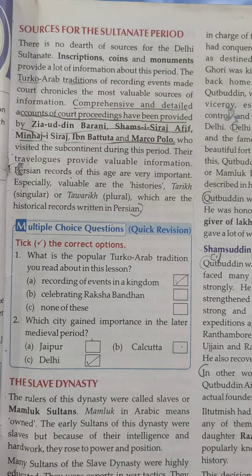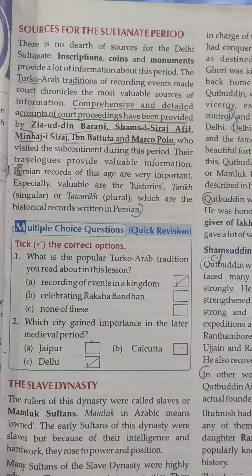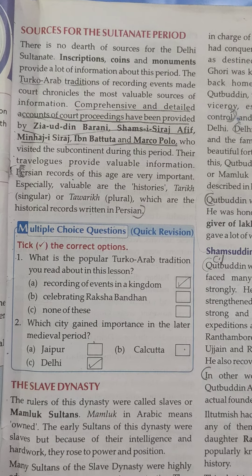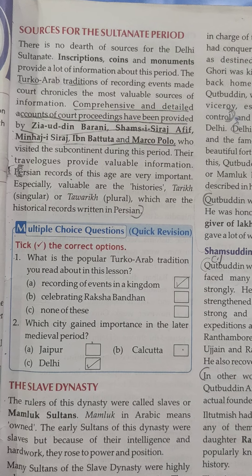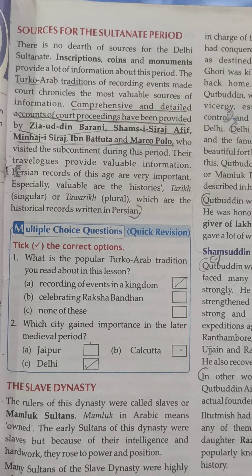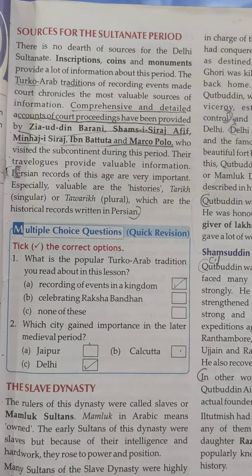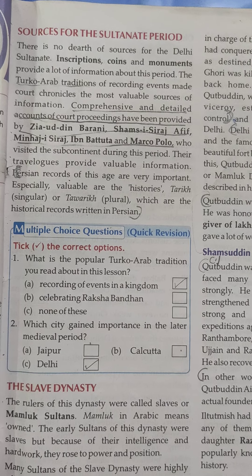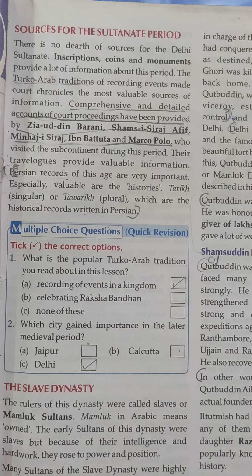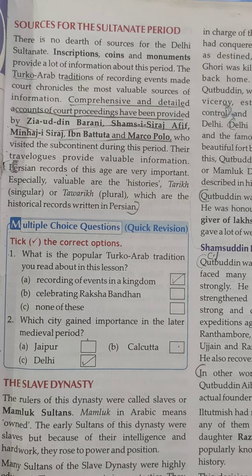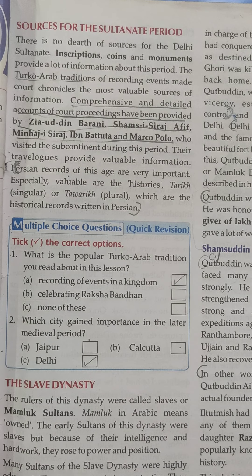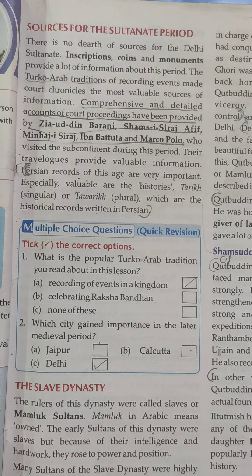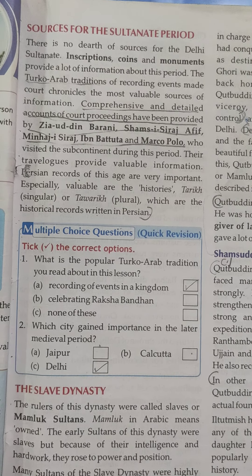A comprehensive and detailed account of court proceedings has been provided. The key chroniclers include Ziauddin Barani, Shams-i-Siraj Afif, and Ibn Battuta and Marco Polo, who visited the subcontinent during this period. These were people present in the medieval period who were in the king's court, and they wrote about how the court worked and everything that happened there.